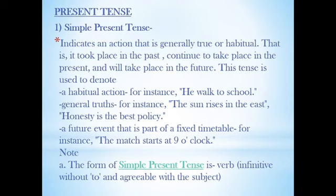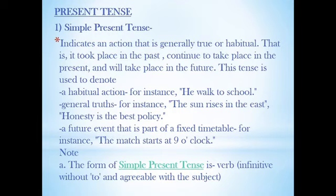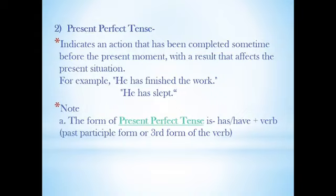Simple present tense indicates an action that is generally true or habitual — it took place in the past, continues in the present, and will take place in the future. It is used to denote habitual actions (e.g., 'He walks to school'), general truths (e.g., 'The sun rises in the east'; 'Honesty is the best policy'), and future events that are part of a fixed timetable (e.g., 'The match starts at nine o'clock'). The form is the verb infinitive without 'to,' agreeable with the subject.